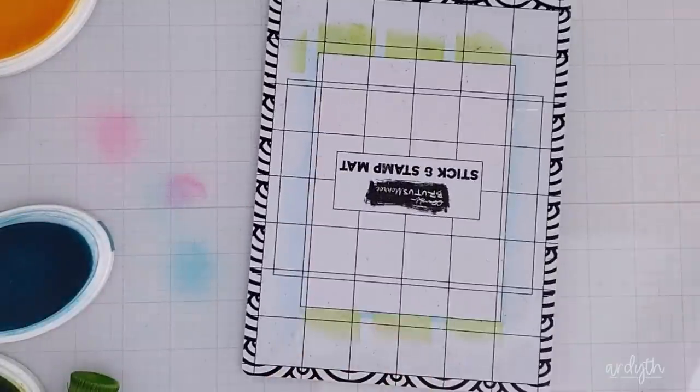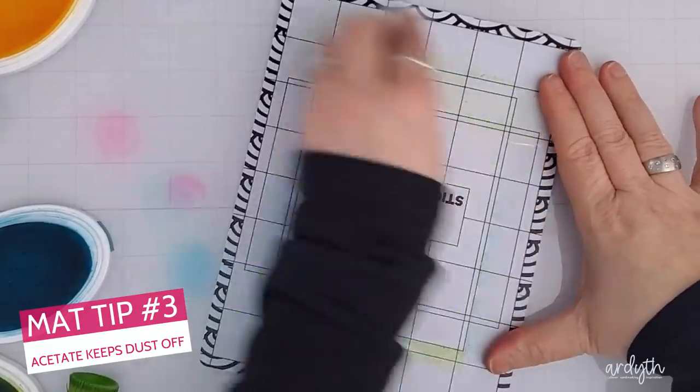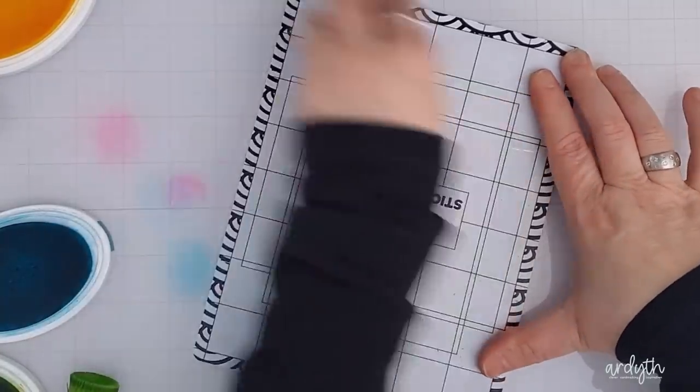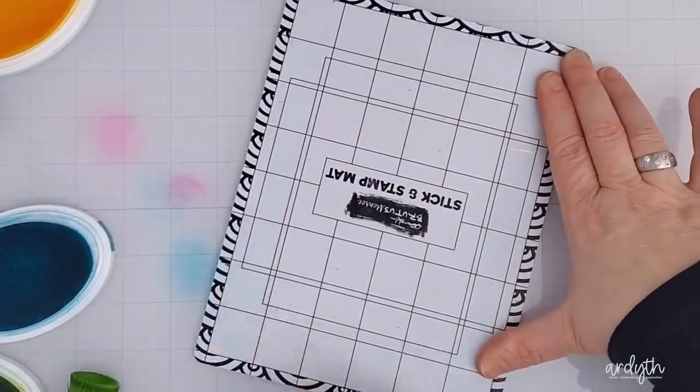Now here's another look at cleaning the sticky mat. It comes with a clear sheet of acetate that you can keep on it when you're not using it so it won't get dusty, but cleaning it off with water or a baby wipe takes away any of your inks and paste and leaves it ready to use again.